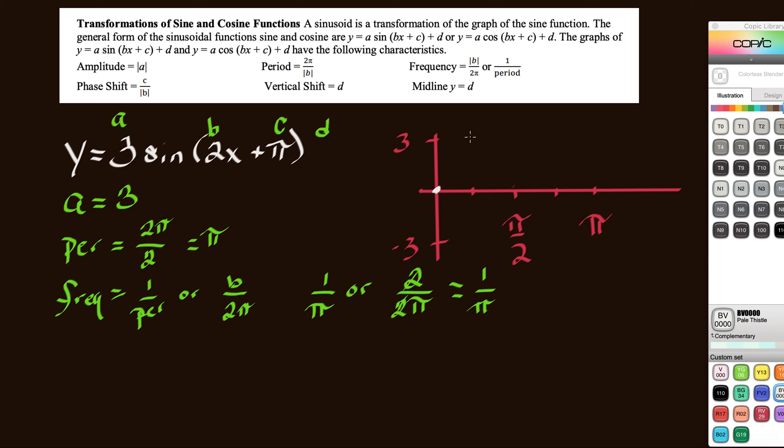It starts here at the origin. Jumps way up here to 3. Cuts back down here. Negative 3. And back here. And so this wave would come up, shoot down, and there you go. And that's basically what it is. And there's no vertical shift, so it stays right here.